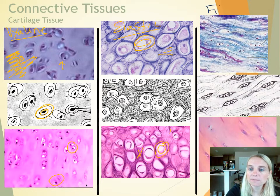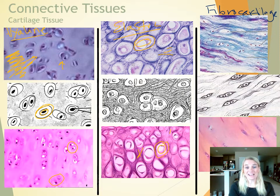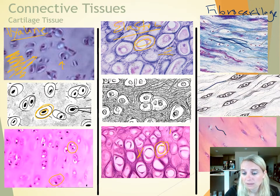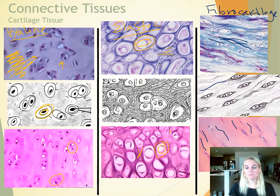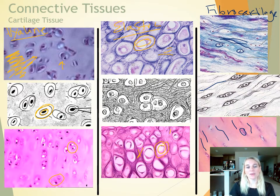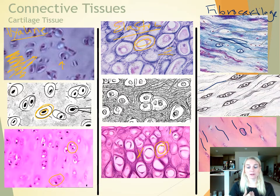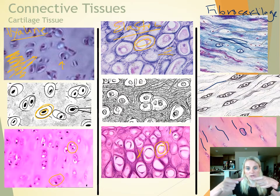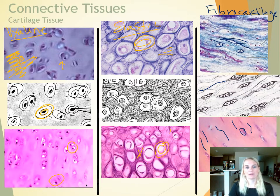Fibrocartilage, or fibrous cartilage, is very dense with a high proportion of collagen fibers — so many that you can actually see them as wiggly lines in the micrograph. Lacunae with chondrocytes are visible but fewer in number compared to the dense matrix. Fibrocartilage is good for compression resistance and is found in the vertebral discs of the vertebrae and the menisci of the knees, where it cushions between the femur and tibia. The three types are hyaline, elastic, and fibrocartilage.